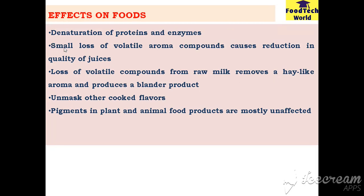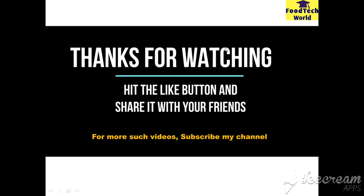Pasteurization also causes a small loss of volatile aroma compounds in juices, which reduces the quality of the juices. It also causes loss of volatile compounds from raw milk — removing the hay-like aroma and producing a blander product. Pasteurization can also unmask other cooked flavors in food products. However, pigments in plant and animal food products are not affected by the pasteurization process.